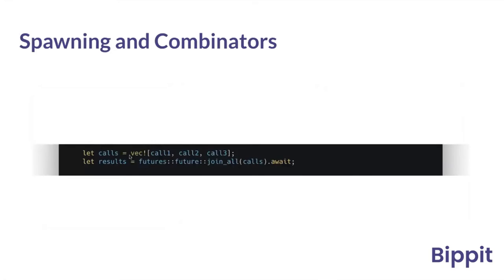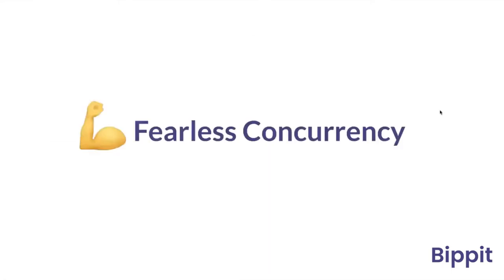Just these two lines of code turn a program into an asynchronous one — it literally takes just two lines to include, and then you get so much more from it. You save so much more execution time. This is what I like to call fearless concurrency — you don't have to be afraid to run asynchronous programs; you can do it with very simple lines of code.